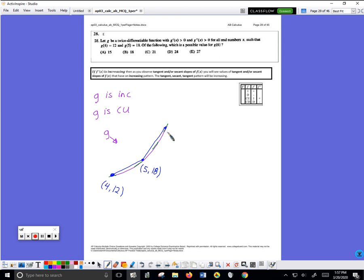Well, G of 6 cannot be 15. This point is already y equal 18. That would cause G to be going up and then go back down, which can't be true if G is going to be concave up and increasing.